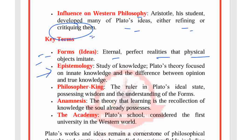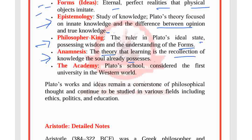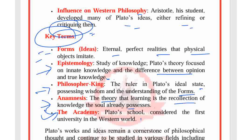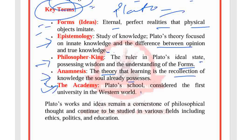Key terms to know about Plato: Forms — eternal, perfect realities that physical objects imitate. Epistemology — the study of knowledge; Plato's theory focused on innate knowledge and the difference between opinion and true knowledge. Philosopher king — the ruler in Plato's ideal state possessing wisdom and understanding of the forms. Anamnesis — the theory that learning is the recollection of knowledge the soul already possesses. The Academy — Plato's school, considered the first university in the Western world.